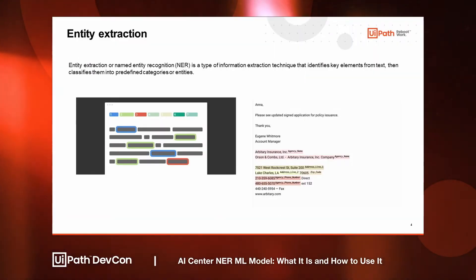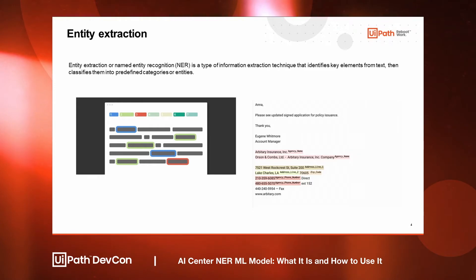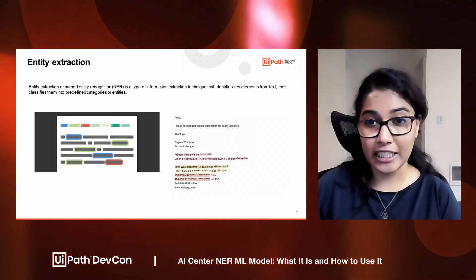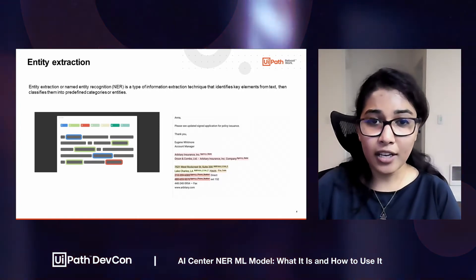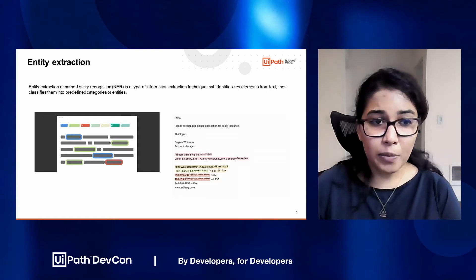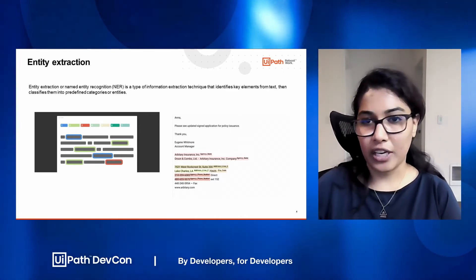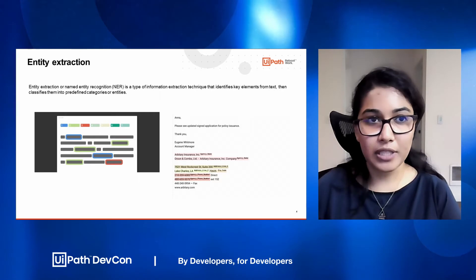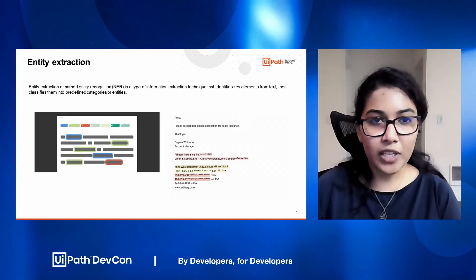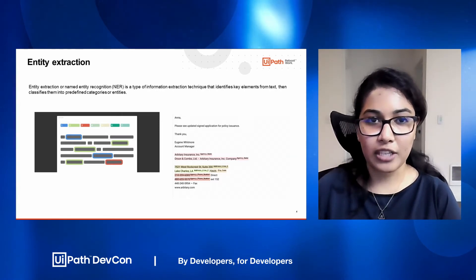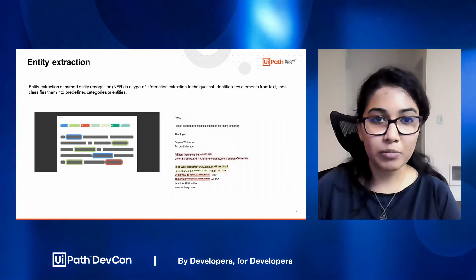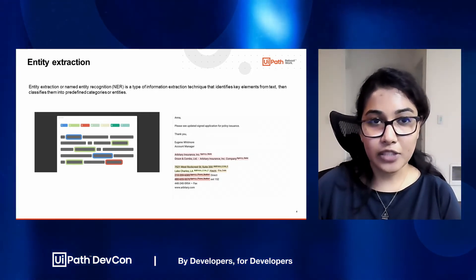Let's start with what exactly is entity recognition and entity extraction. It's a basic task of identifying key information in any piece of text. For example, in unstructured text like a letter or a contract, you want to extract key pieces of information like the contractor name, the loan amount, some signature text, phone numbers, and agent names. Those are all what are called entities. In the example here, we've extracted an agency name, an agency phone number, the address of the agency, and other details from an email.